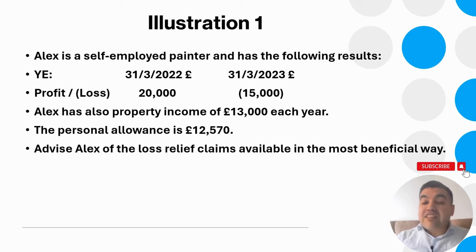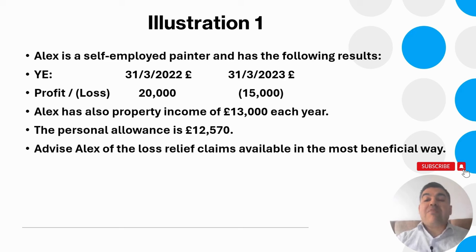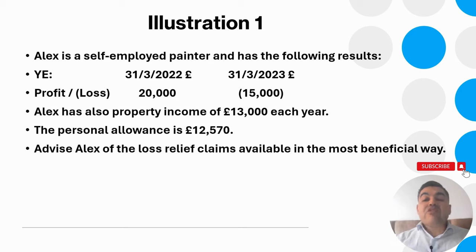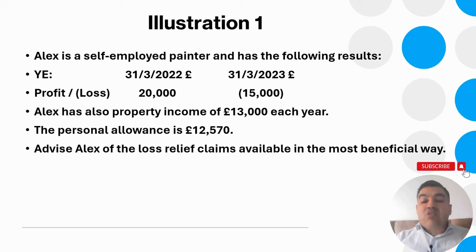Illustration: Alex is a self-employed painter. For the year ended 31st March 2022 he has a profit of £20,000. For 31st March 2023 he has a trading loss of £15,000. Alex has property income of £13,000 each year. The personal allowance is £12,570 for both years. We must advise Alex of the loss relief claims available in the most beneficial way. In 2023, if Alex makes a current year claim he will use £13,000 of losses against the property income.